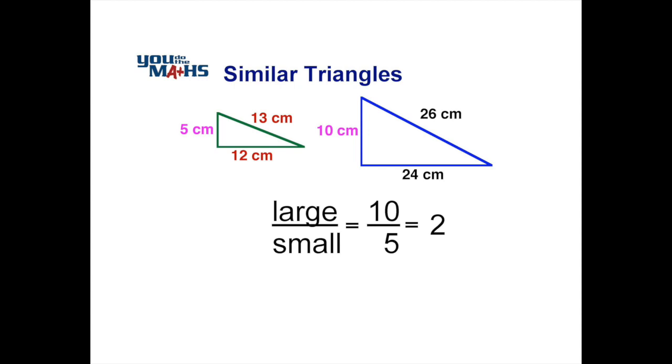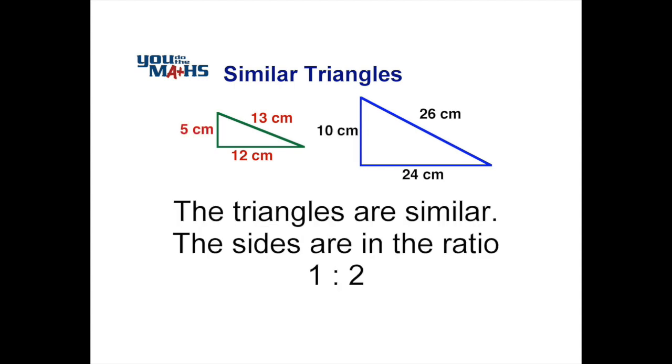So any side on the smaller triangle when multiplied by 2 gives the matching length on the larger triangle. The two triangles are said to be in the ratio of 1 to 2, and because this is true for every pair of matching sides, the triangles are said to be similar.